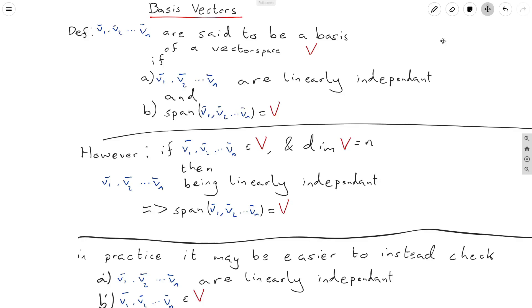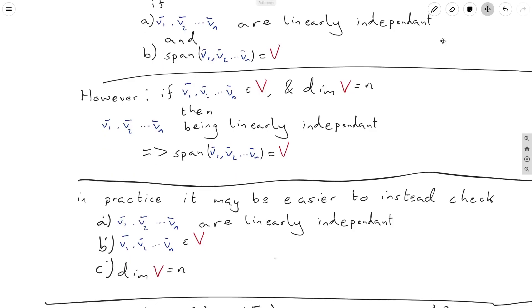So that means that if these two conditions up here are met, then this condition implies this condition. So therefore, we could instead check that this first condition, where all our vectors are inside our vector space is true, the dimension of V is equal to n.